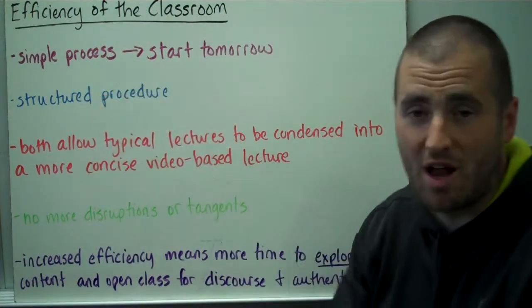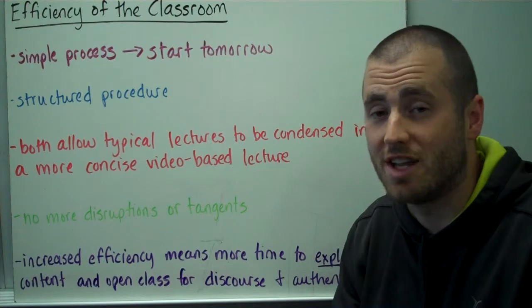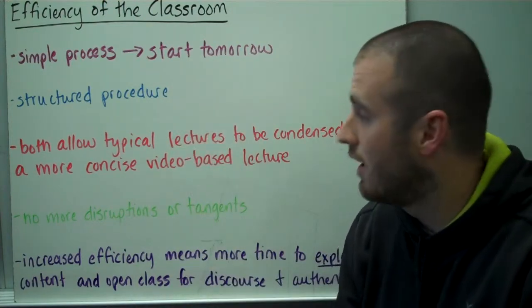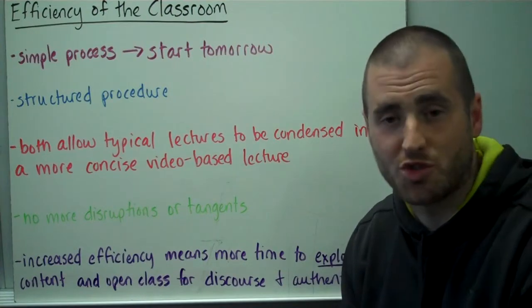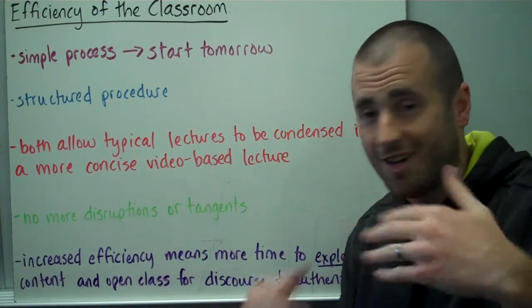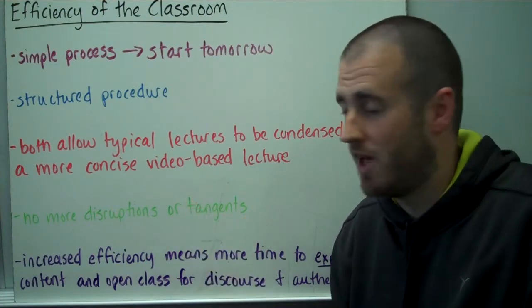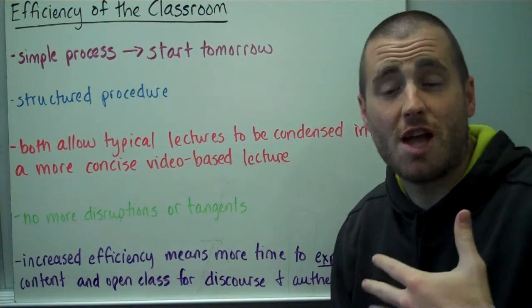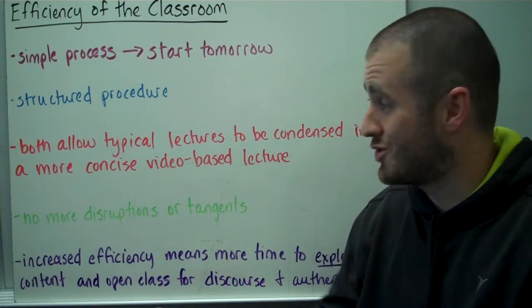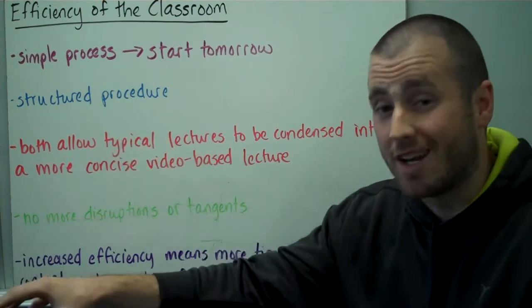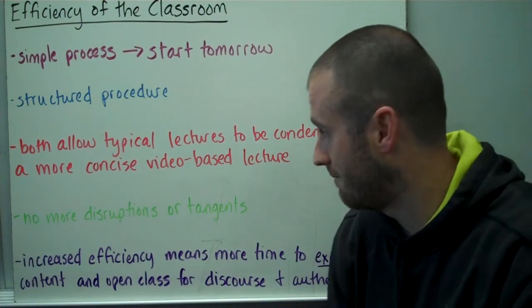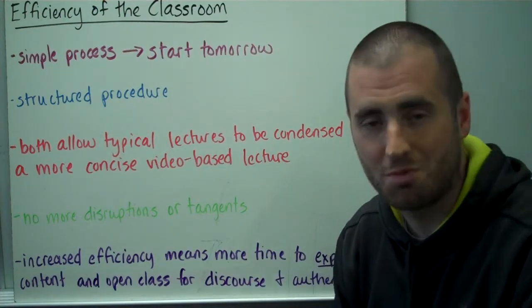One of them is efficiency. It's a very simple process — flipping the classroom is fairly easy, and the process I'm modeling for you today is very low barrier. You can start this tomorrow. It's a very structured procedure: you need boards, a tripod, a camera, and a pretty face, and you can film awesome videos tomorrow. You can make your time spent in class more engaging and meaningful for students, because you're taking the lecturing piece and putting it at home. The direct instruction isn't going away — we're just altering the location it's in.